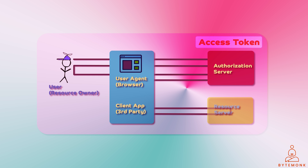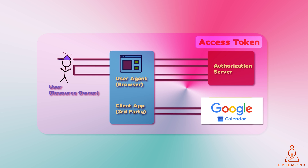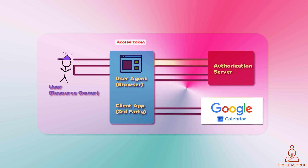Let's say you want to use a third-party application to access your Google Calendar. The third-party application first needs to obtain an access token from Google using OAuth 2.0 to authenticate you. Once authenticated, Google issues an access token to the third-party application, which encodes it as a JWT. The JWT is then sent to the resource server — Google Calendar in this case — which verifies the JWT and grants the third-party application access to your calendar.